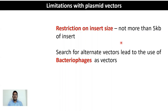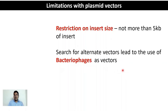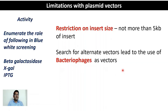One major limitation of plasmid vectors — the two-step selection process — was resolved using blue-white screening. However, the limitation with respect to insert size remains: no more than 5 to 6 kb can be held by a plasmid. The search for alternate vectors led to several options, starting with bacteriophages, which will be discussed in the next lecture. As an activity, enumerate the roles of beta-galactosidase, X-gal, and IPTG in blue-white screening.